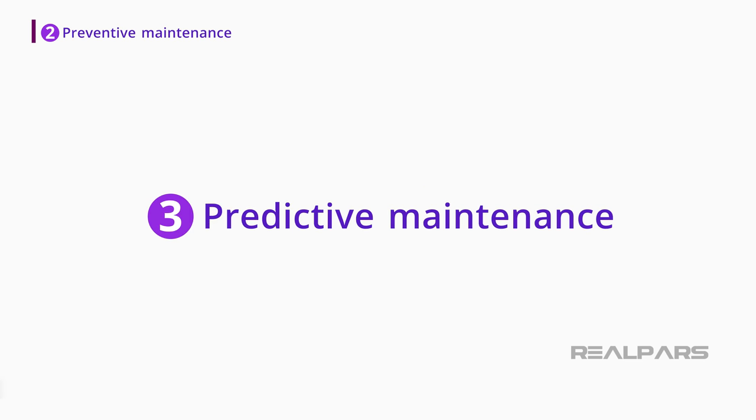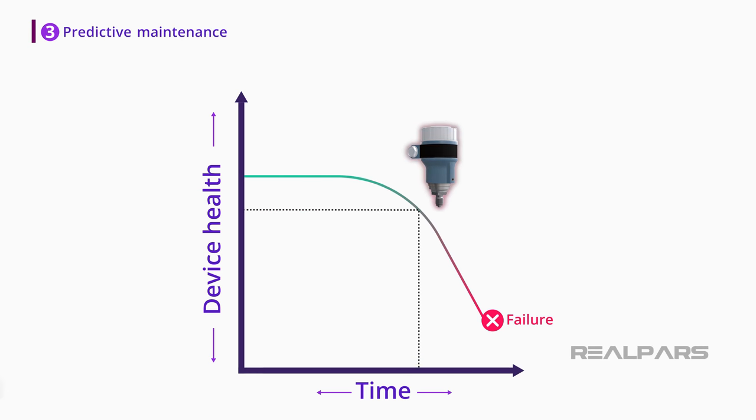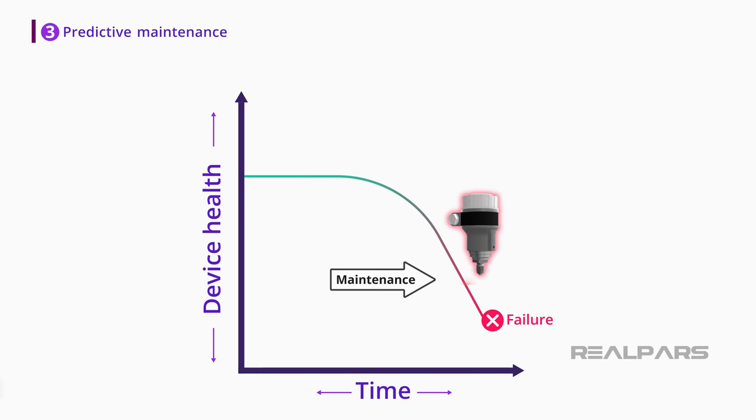This is where predictive maintenance can help. As the name suggests, with predictive maintenance, you predict when the device fails and schedule maintenance just before that. Following this process, you minimize the device or machine downtime and maximize its lifetime.